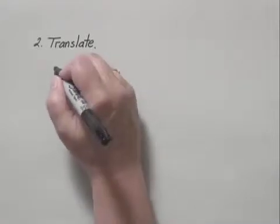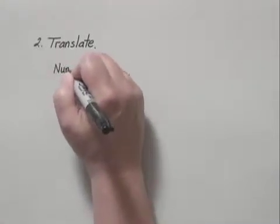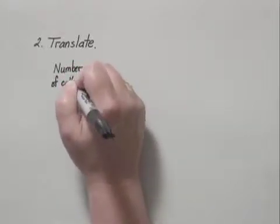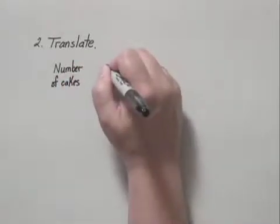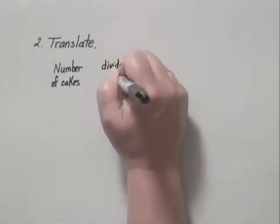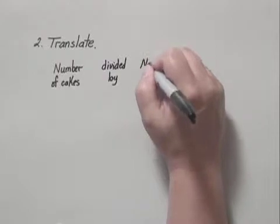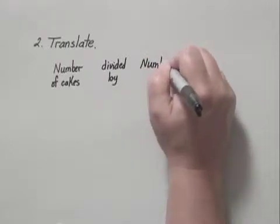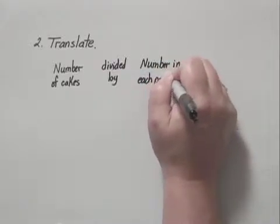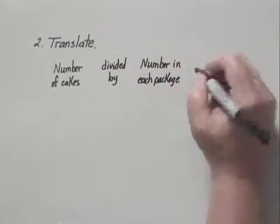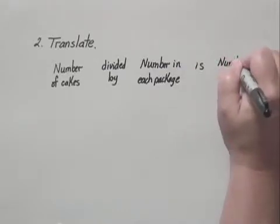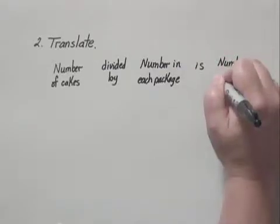We have the number of cakes which we are given, and then if we divide that number of cakes by the number in each package, which we are also given, which was 12, that is the number of 12-packs which we want to find. And we call that n.